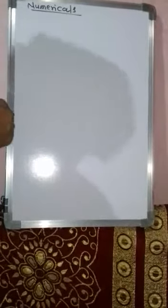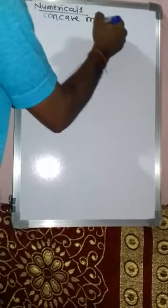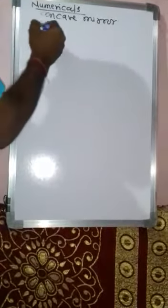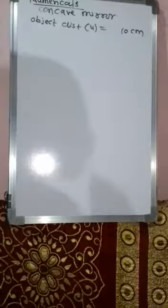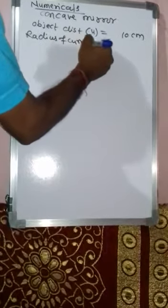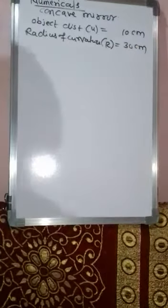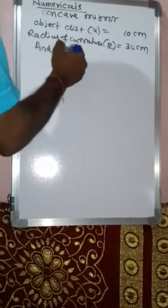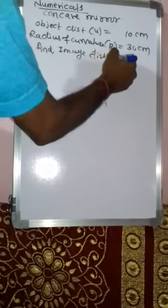Friends, we see the numericals on the basis of concave mirror. Suppose the object is placed at 10 cm in front of a concave mirror, so object distance u is 10 cm. The radius of curvature R is given as 30 cm. Now find the image distance v, magnification, and the nature of the image.